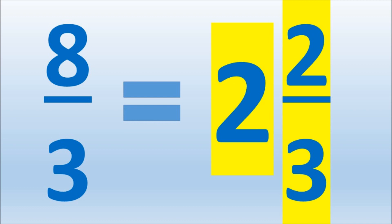Here we have the original improper fraction which converts to a mixed number of 2 and 2 over 3.